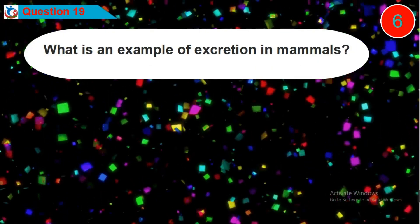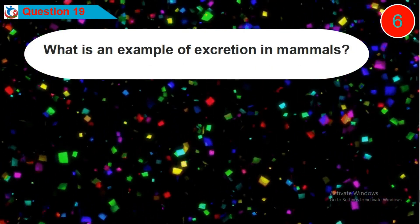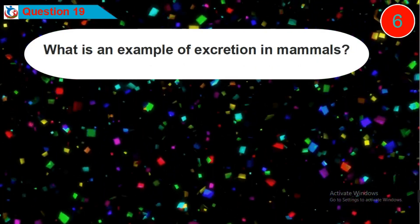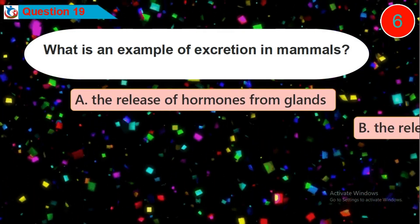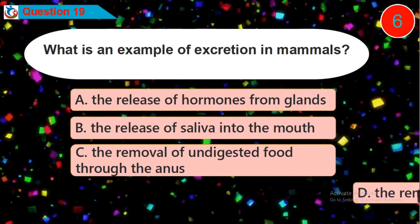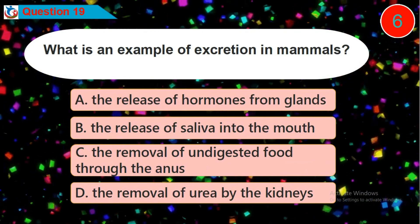Question 19: What is an example of excretion in mammals? Is it option A, B, C, or D?